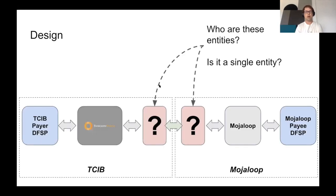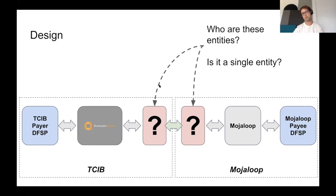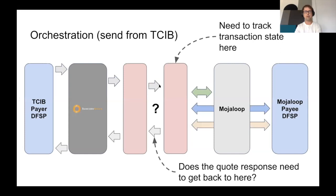Right up front, we have to figure out the design, and I think we've gone around and around on this cross-network interoperability question quite a bit. Often when we talk about this, we talk about a single entity in the middle. But we've also had a lot of debate around that — for example, if BankServe is incorporated in South Africa and the Mojaloop system it's connecting to is in another country, can an entity in South Africa be a participant in the Mojaloop system, or vice versa?